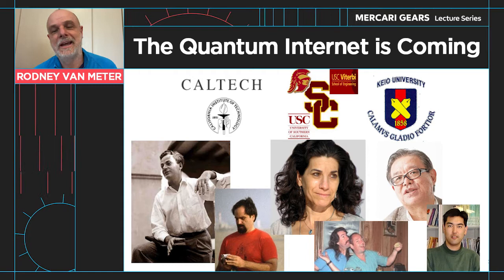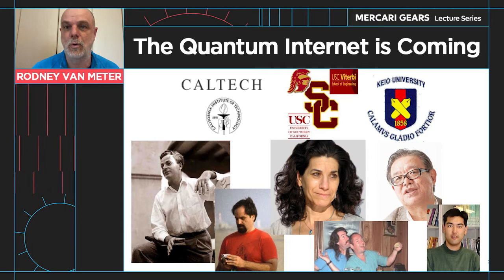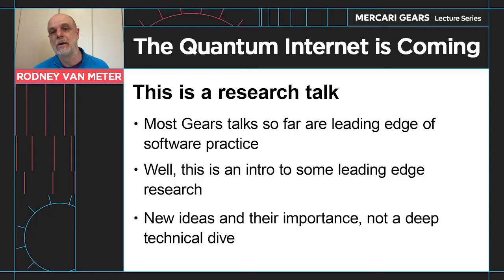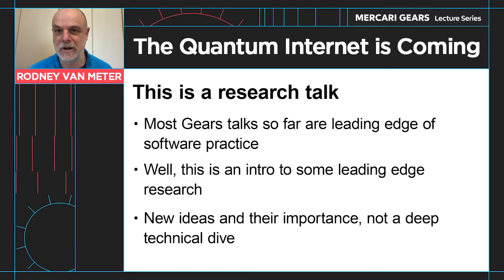Then I did a master's degree at the University of Southern California working with Debra Estrin and with Kim Corner. And then much later in my career, just 17 years or so ago, I came to Keio University where I did my PhD in computer science. My research area is quantum computing and quantum internet, and so today we're going to talk about the quantum internet. I hope you'll follow along and get new ideas for what's going to happen as it develops over the coming years.